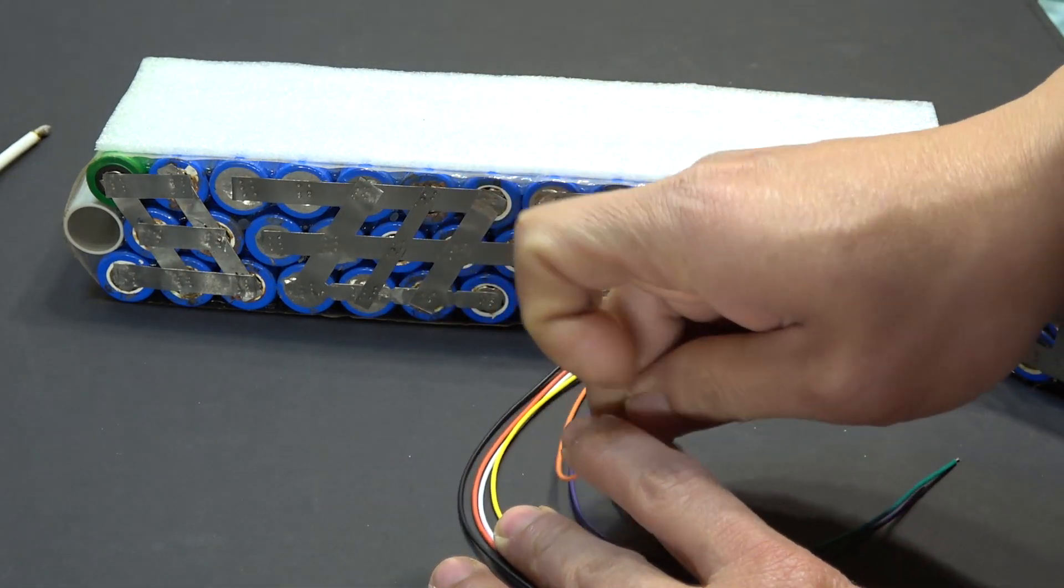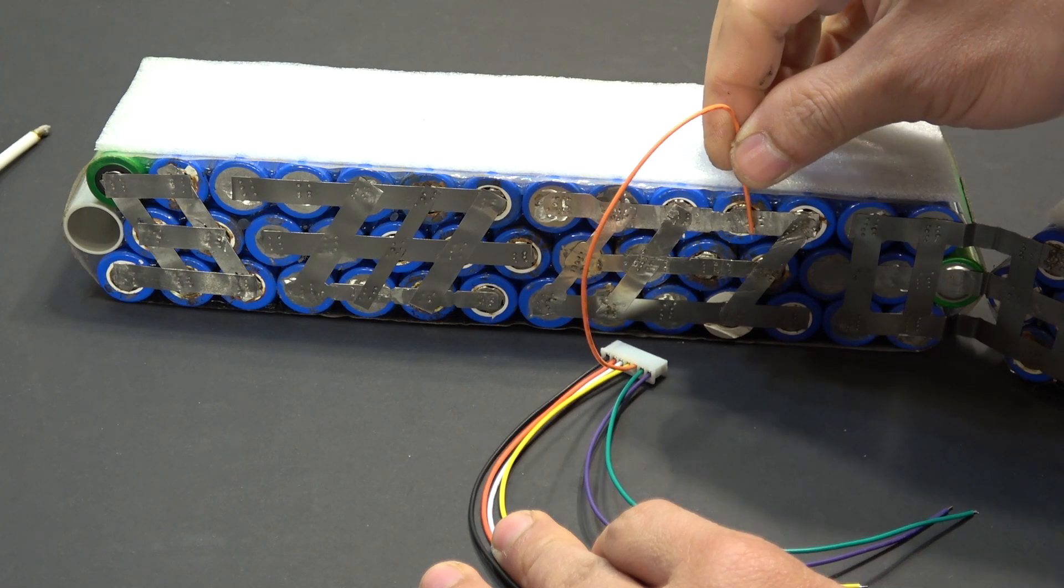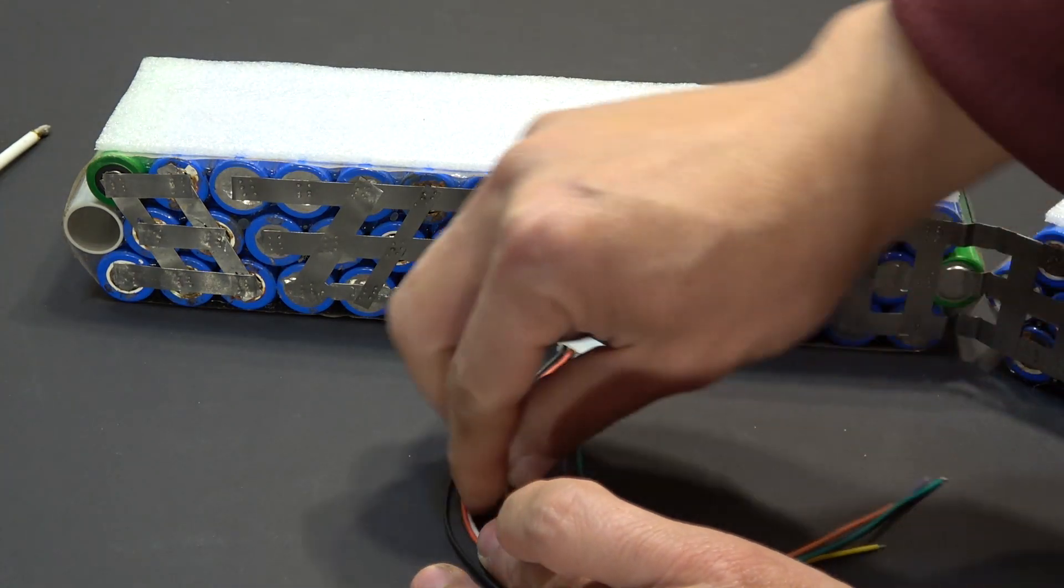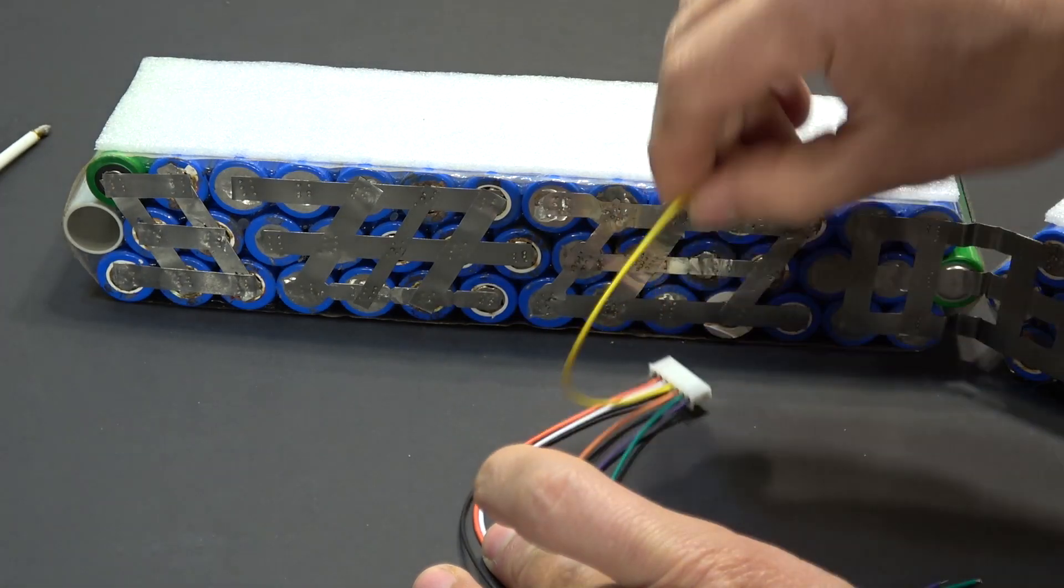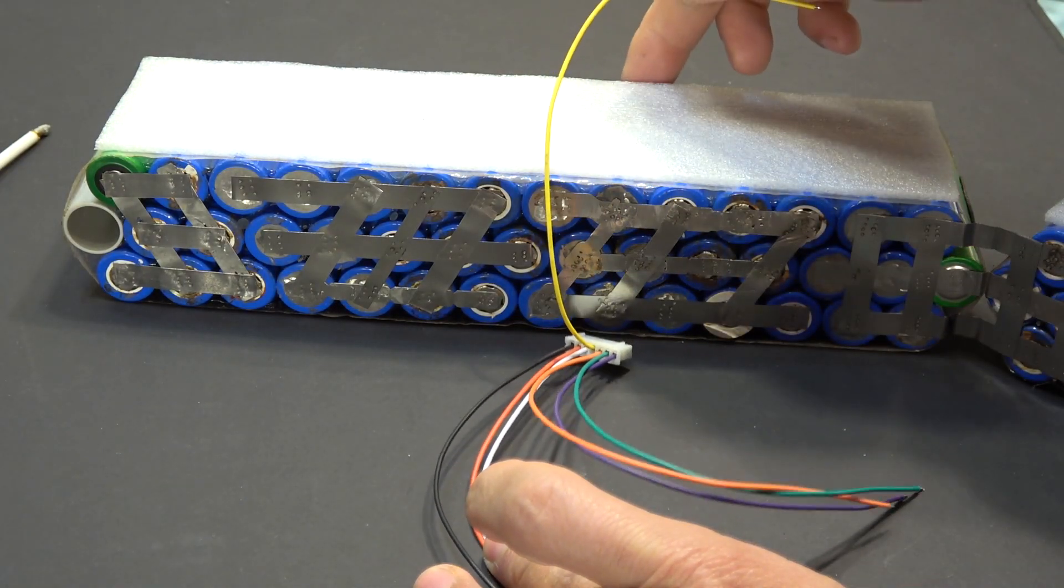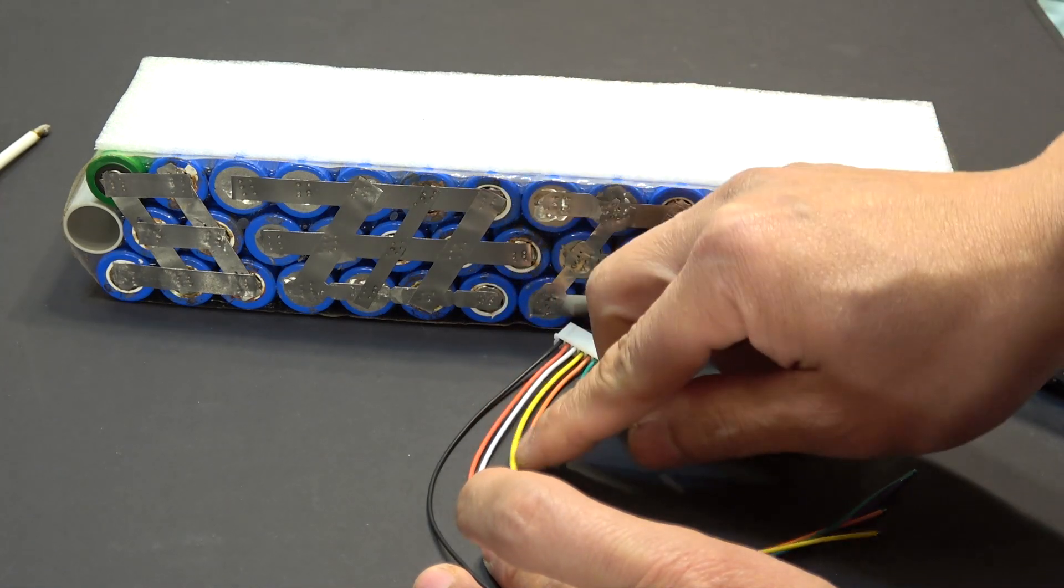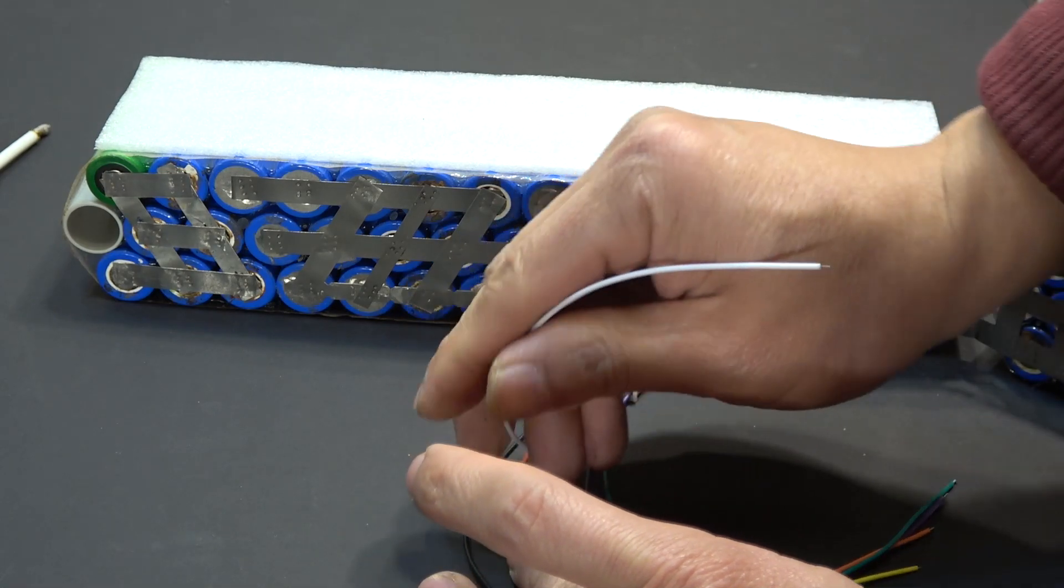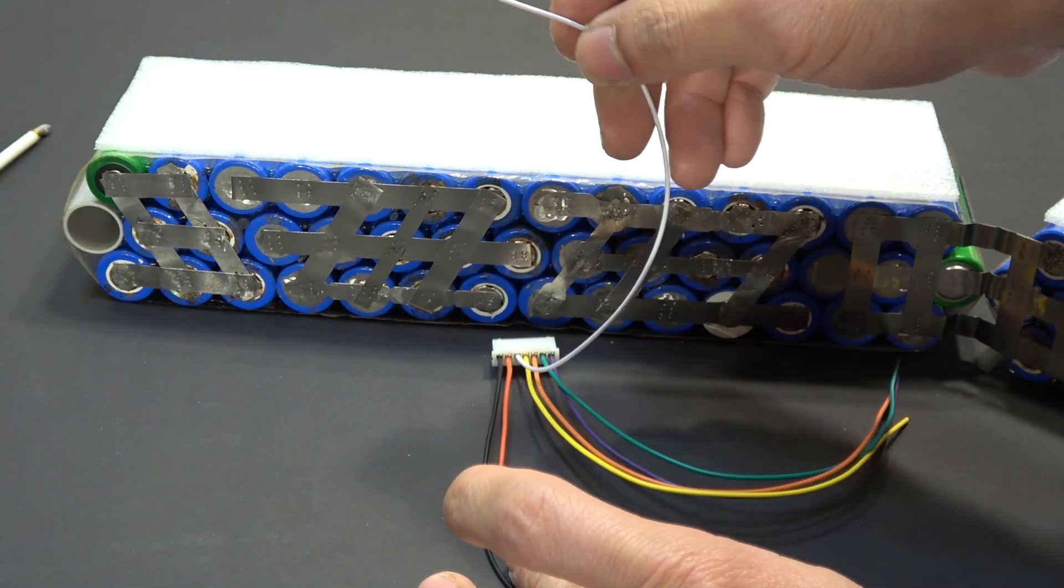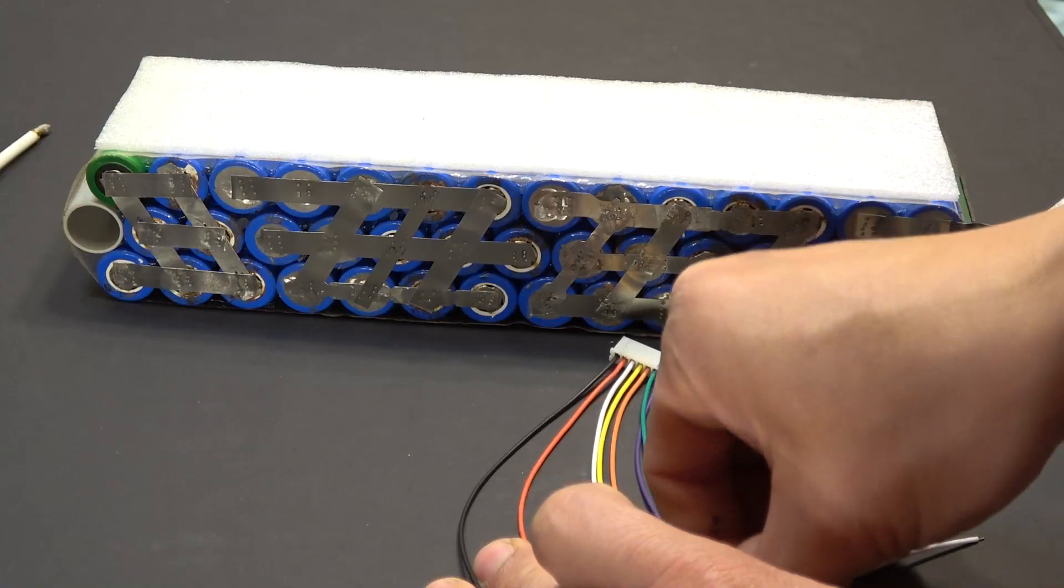The fourth cable, the yellow cable is going on the positive terminal of the third battery, it's on the back here. The fifth cable, the white cable is going to go onto the positive terminal of the fourth battery.